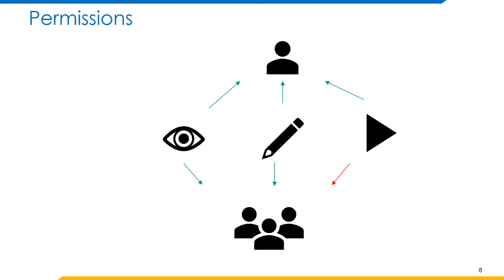UID and GID answers the questions on who shall be provided the access, but that is not all. The next question would be the what question — what are the privileges that you could assign to a user or a group? Unix facilitates a permission-based model for this. There are three kinds of permissions on files that Unix offers: read permission allows us to read a file, write permission allows us to write or modify a file, and execute permission lets you execute a particular file — which refers mostly to binaries and shell scripts.